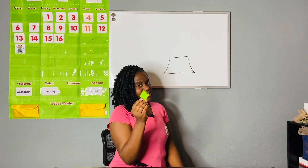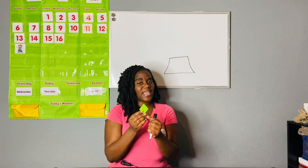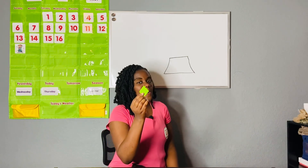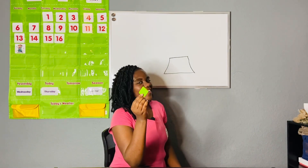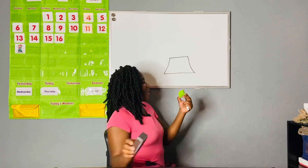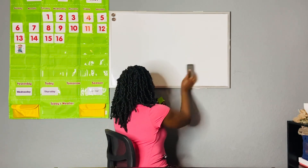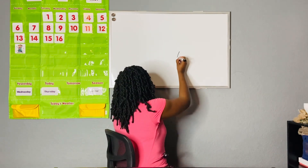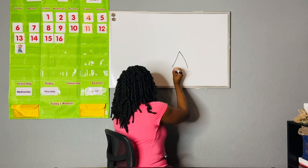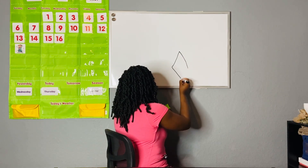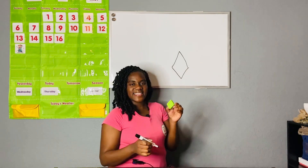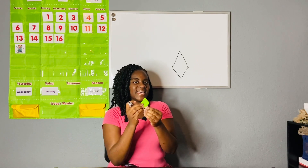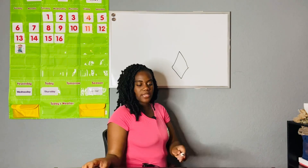Do you remember the name of this special shape? It has three names — if you said a kite, a rhombus, or a diamond, you are correct! Let's draw our special shape: go right here, then down, then down again, then back up. That is our diamond, kite, and rhombus.